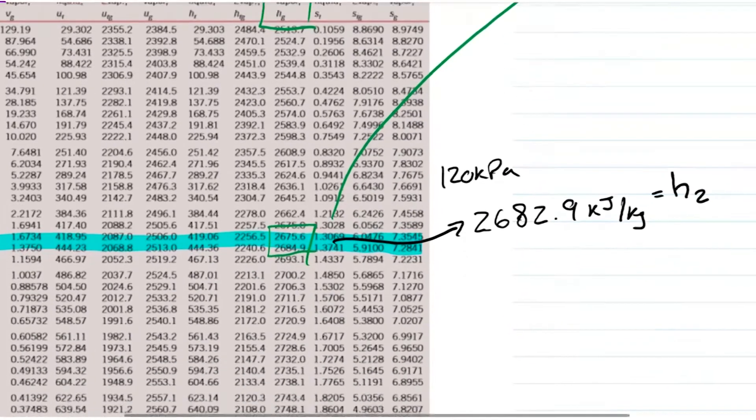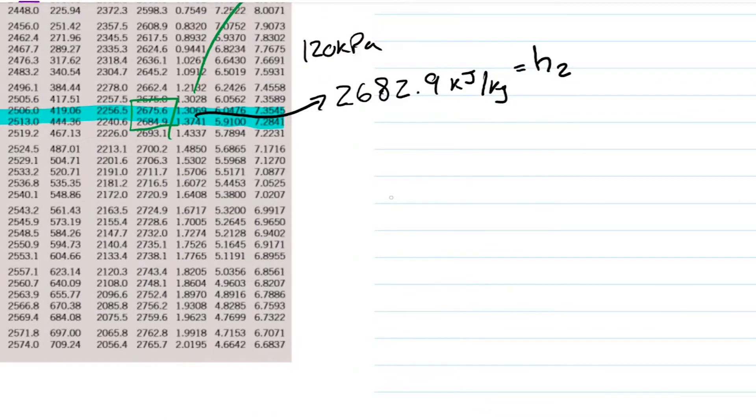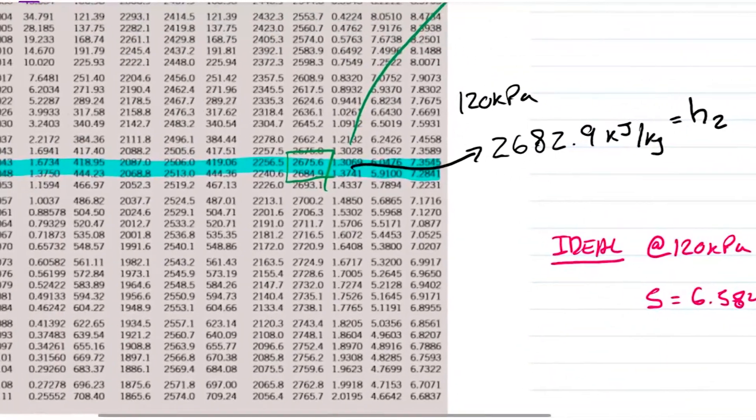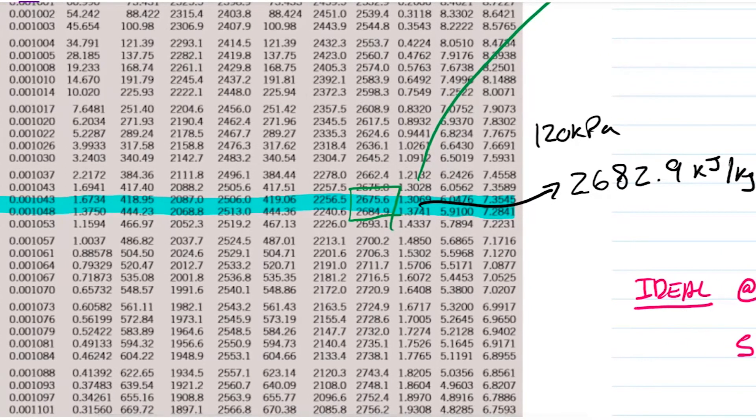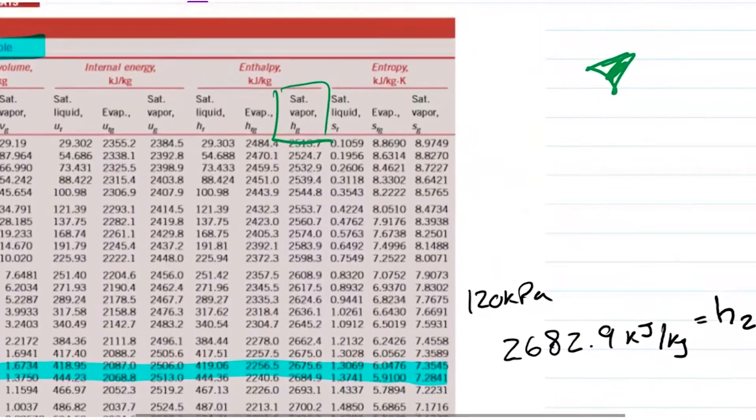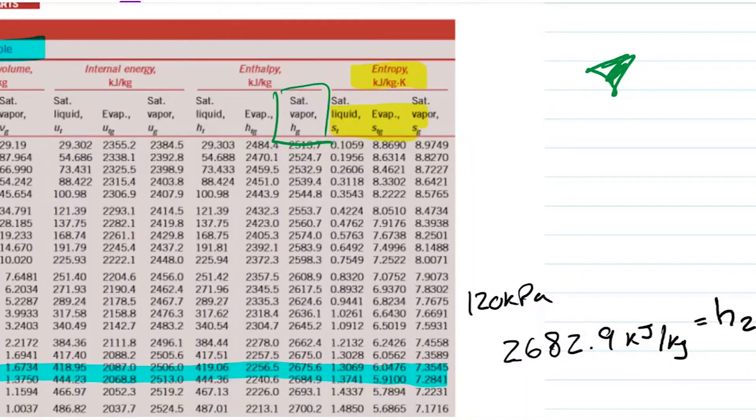Last, I want to find this imaginary case that is at 120 kilopascals, yet has an entropy of 6.5843. So I'm going to focus here on these two lines, these two values. I'm going to look just at the entropy. I'm looking at these values here, these guys here.